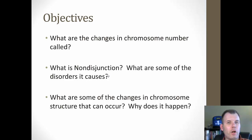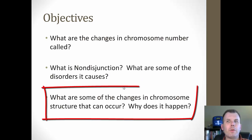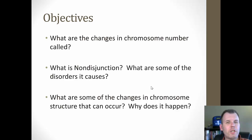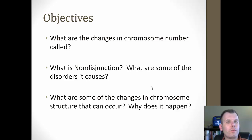Then we'll look at some of the disorders it can cause. Probably the most common one you've heard of is called trisomy 21, also known as Down syndrome, where you have three copies of chromosome 21 as opposed to the normal two. The third thing we're going to look at is changes that can occur in chromosome structure — not changing the number of chromosomes, but changing the structure by either adding genes, deleting genes, flipping them, or translocating them. Changing chromosome structure can change the number of genes, delete some genes, and that can cause genetic problems as well.